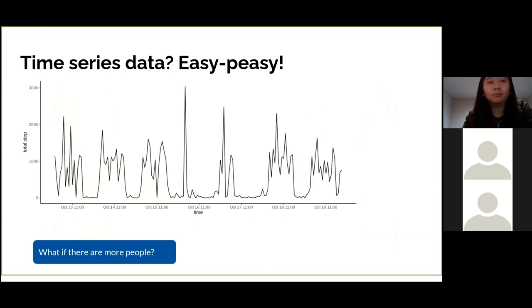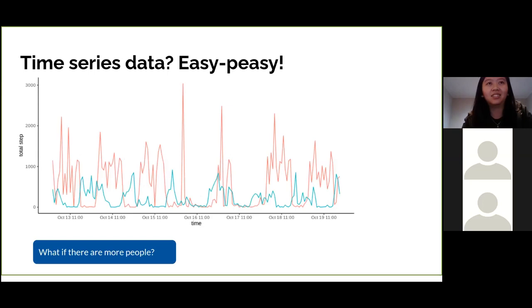And what if we have more people? Actually, we can do a similar approach. We can just aggregate the data, let's say on an hourly basis, and create a similar plot, just superimpose them with different colors like this. Here we can compare the pattern of these two persons, which seems a bit different.